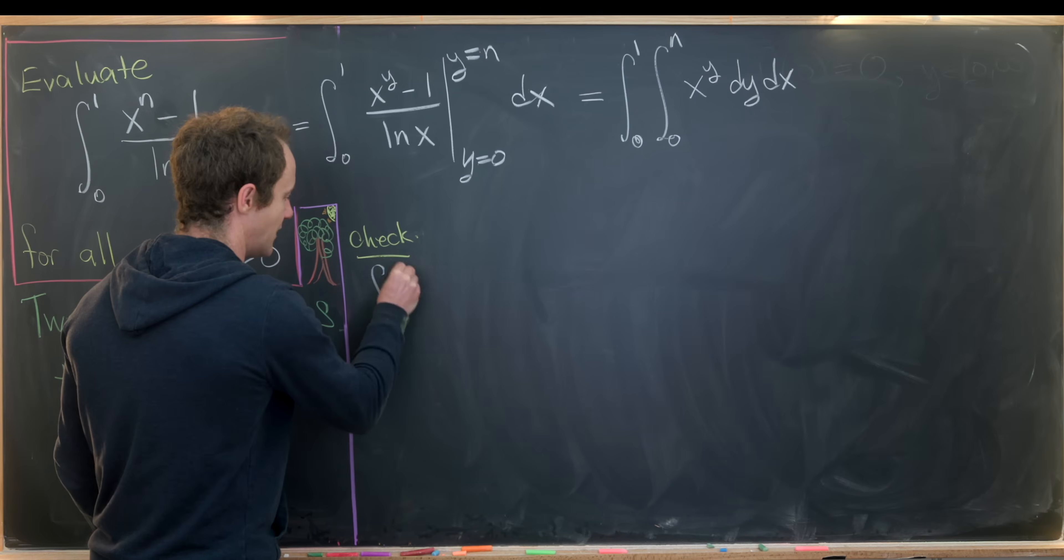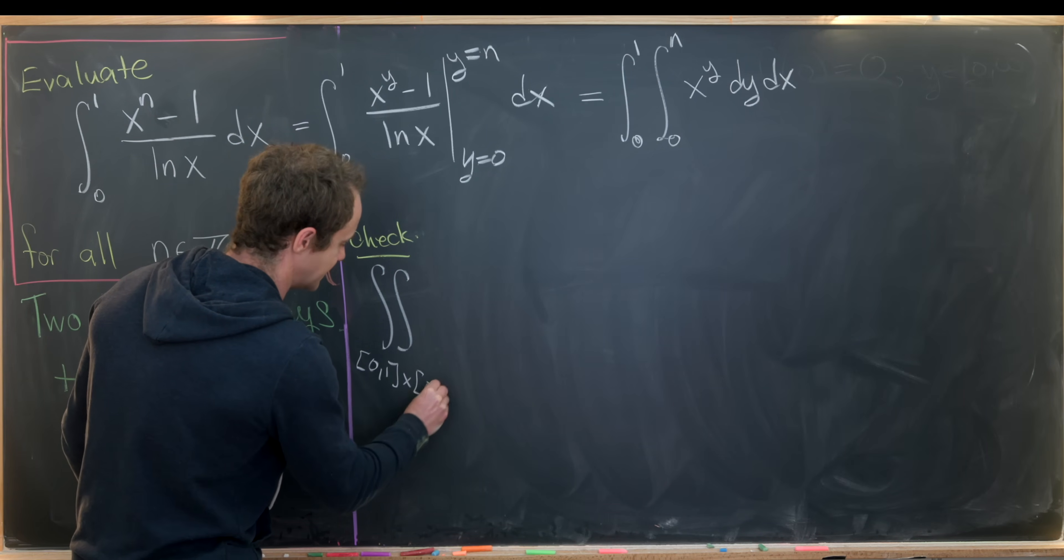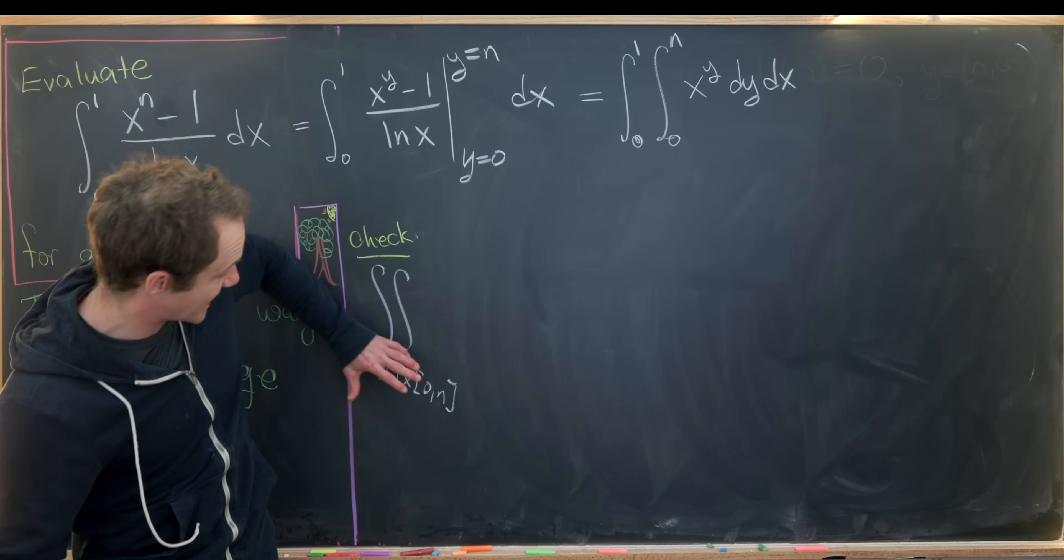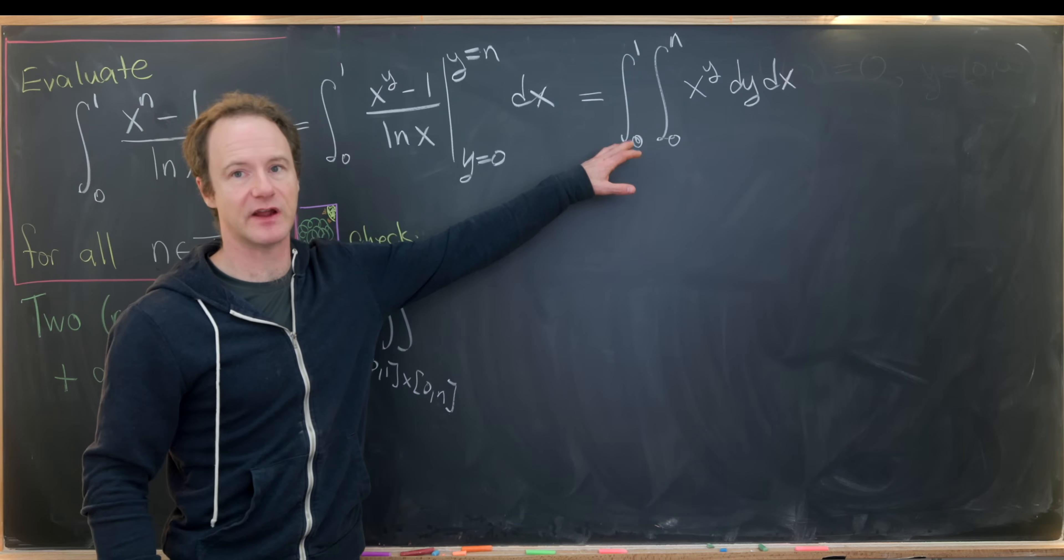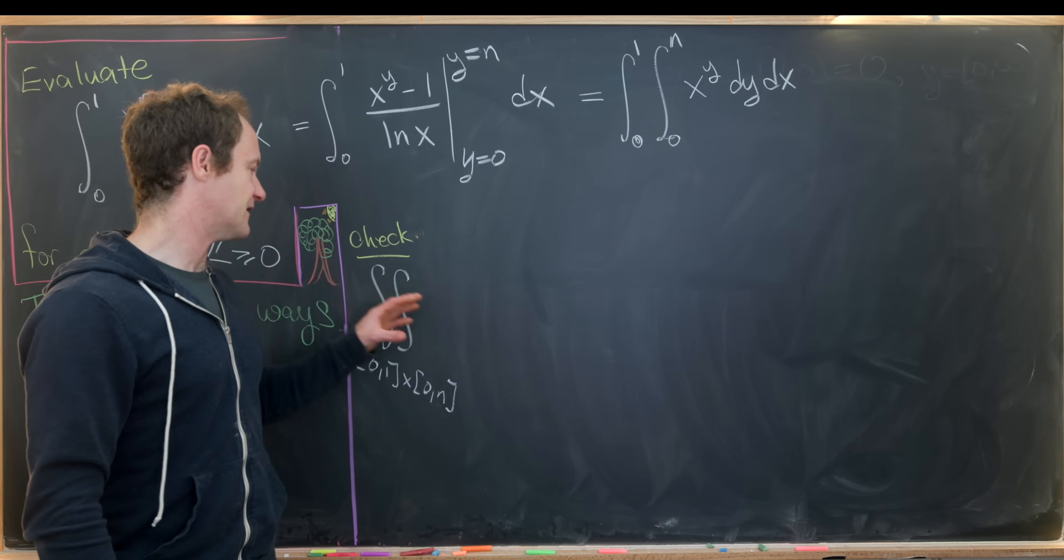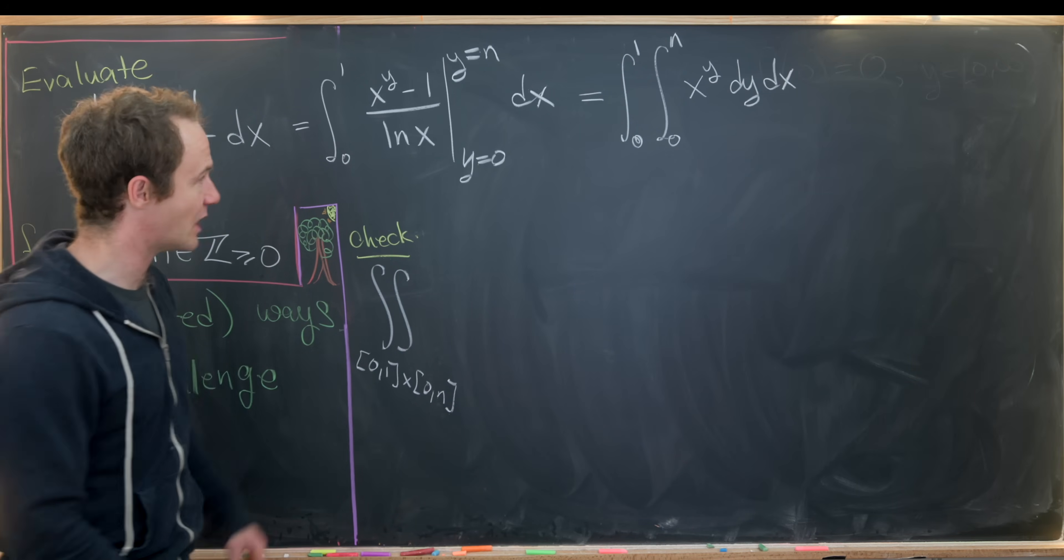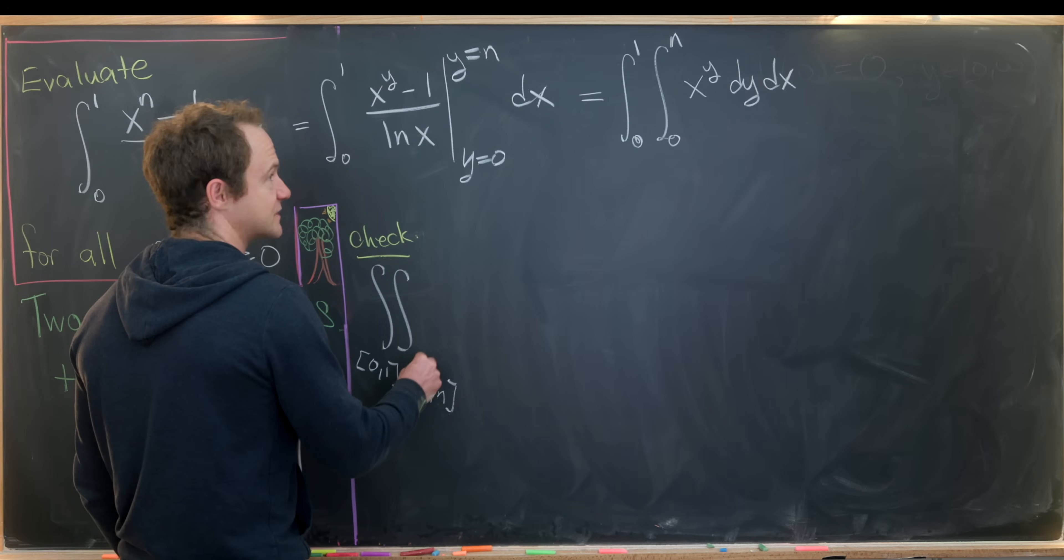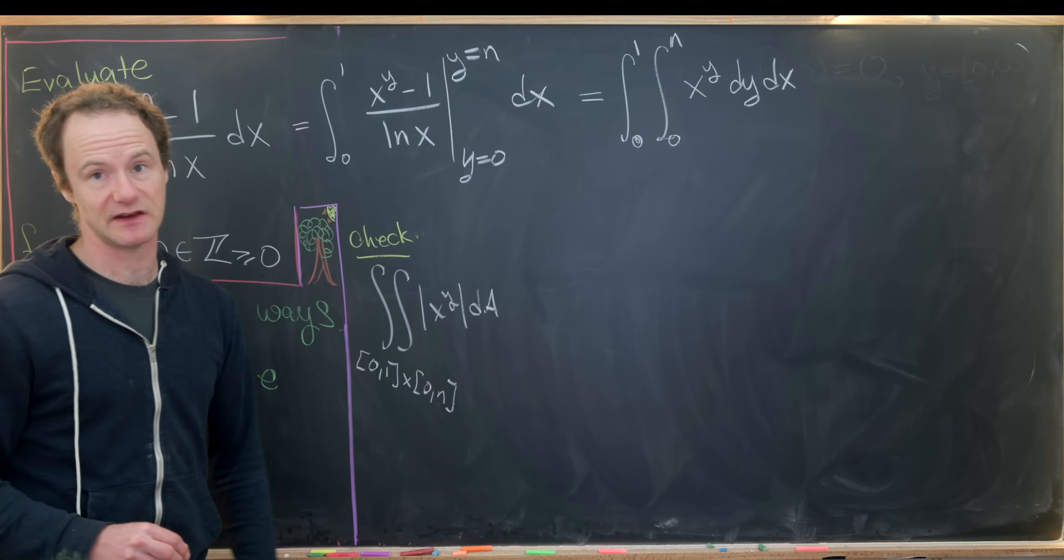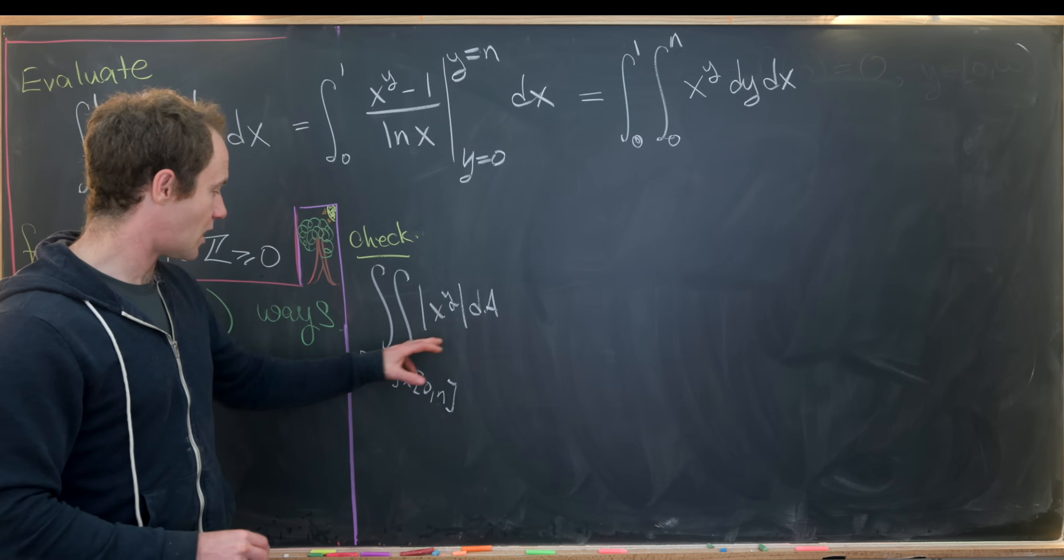So here we can take the double integral over 0 1 cross 0 n. So let's recall that the double integral is over a two-dimensional region, whereas this is really an iterated integral. It's a single integral inside of a single integral. Now these are equal if this sort of thing holds, but they're not equal if this sort of thing doesn't hold. So anyway, we can check that the double integral over this region of the absolute value of x to the y dA is less than infinity. But that's pretty clearly less than infinity. Because notice, on this region, 0 1 cross 0 n, the x value is always between 0 and 1.